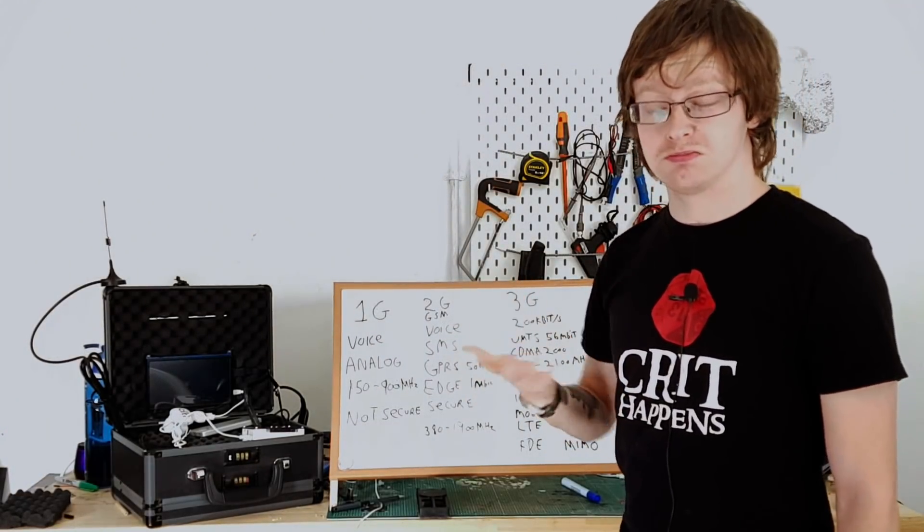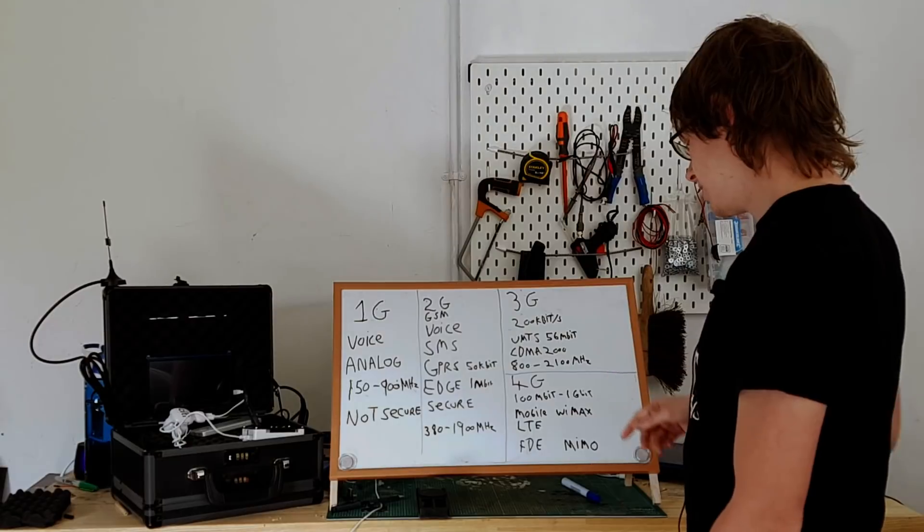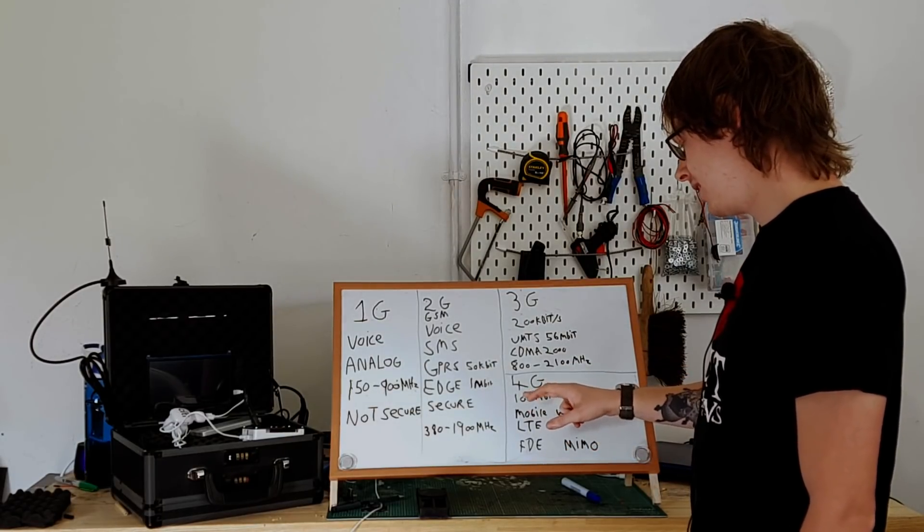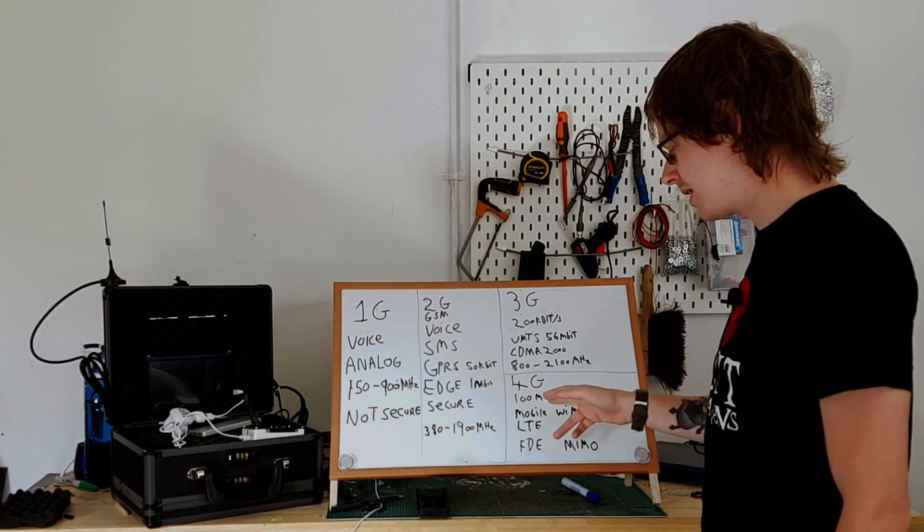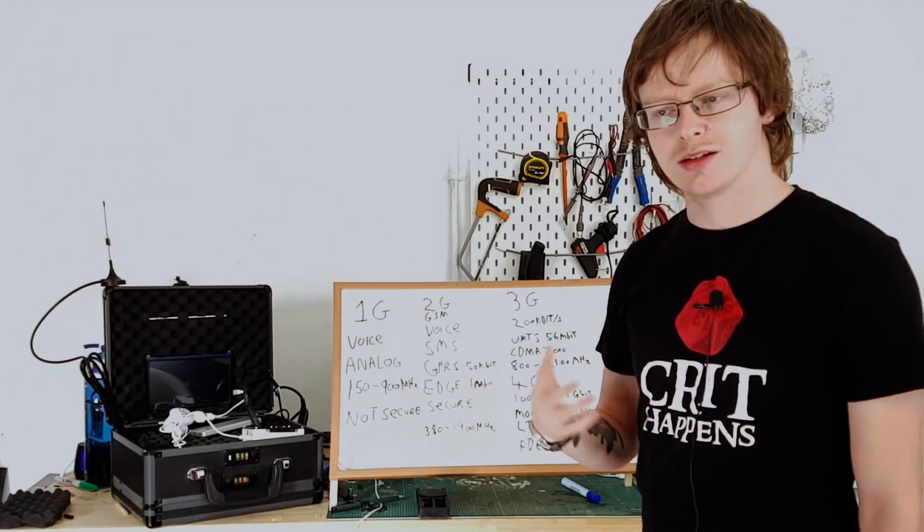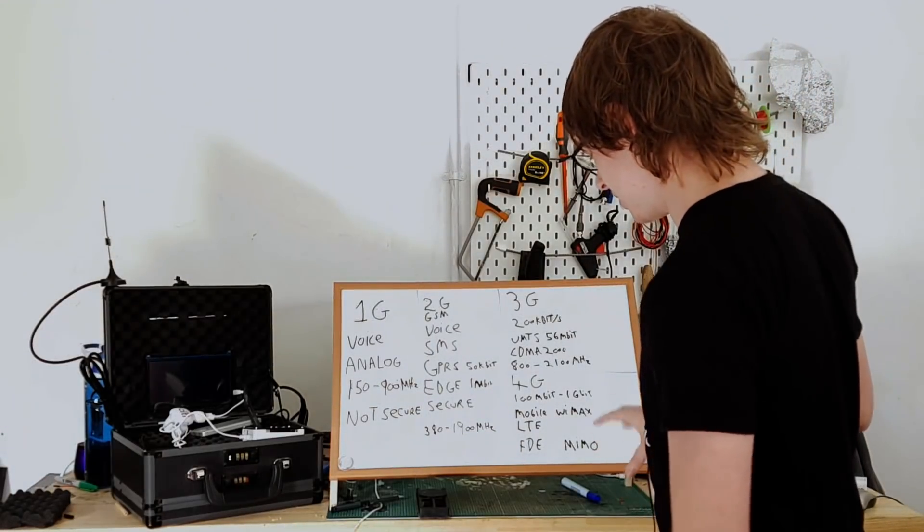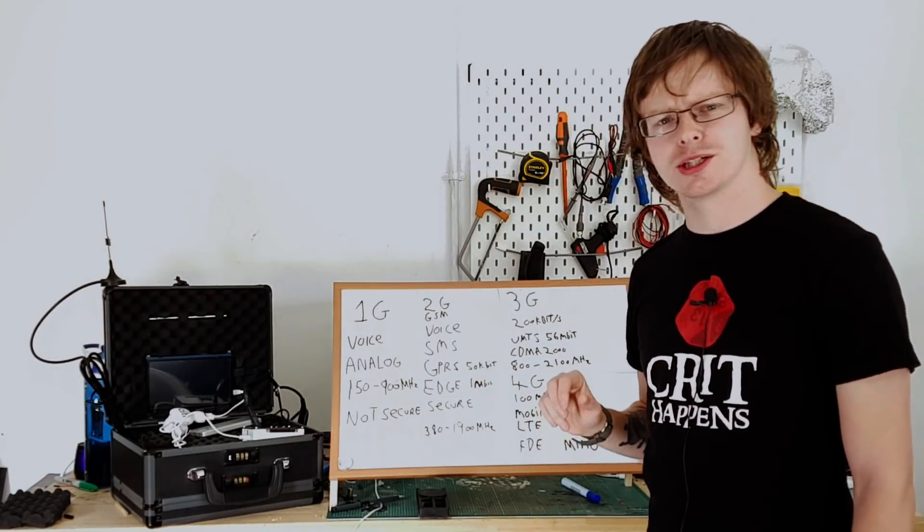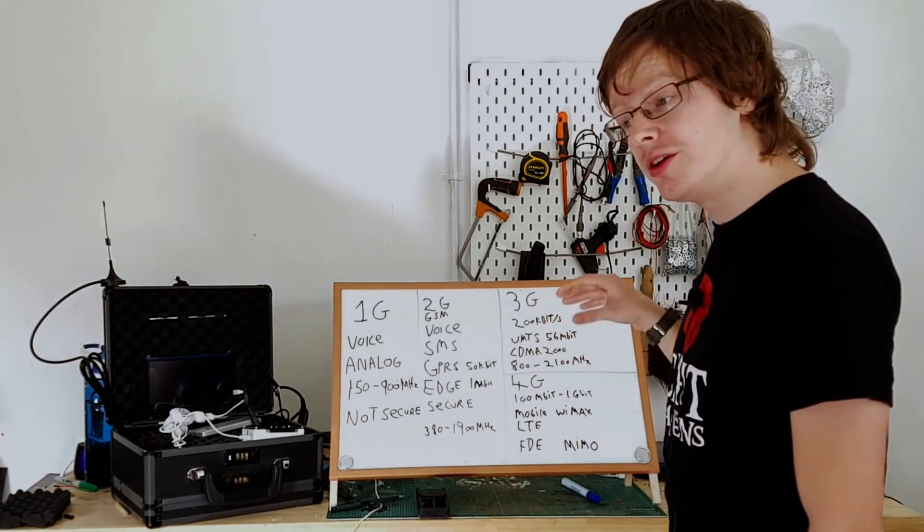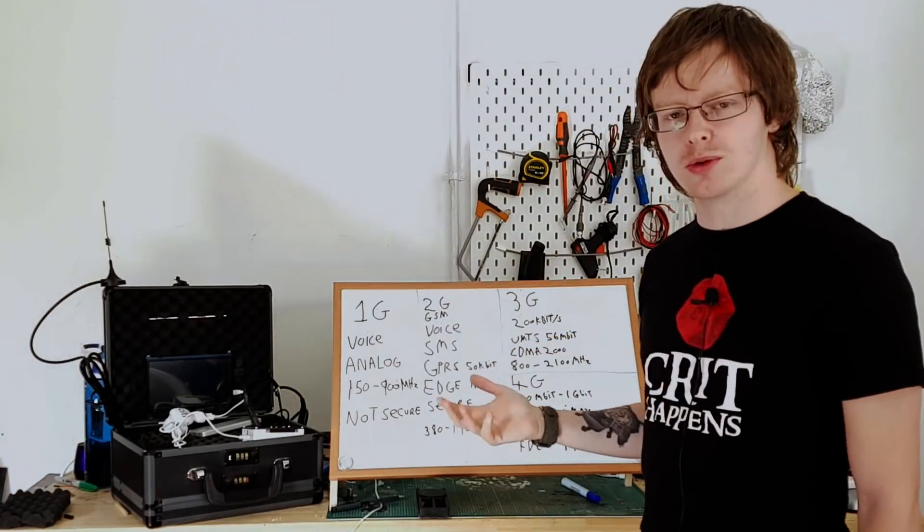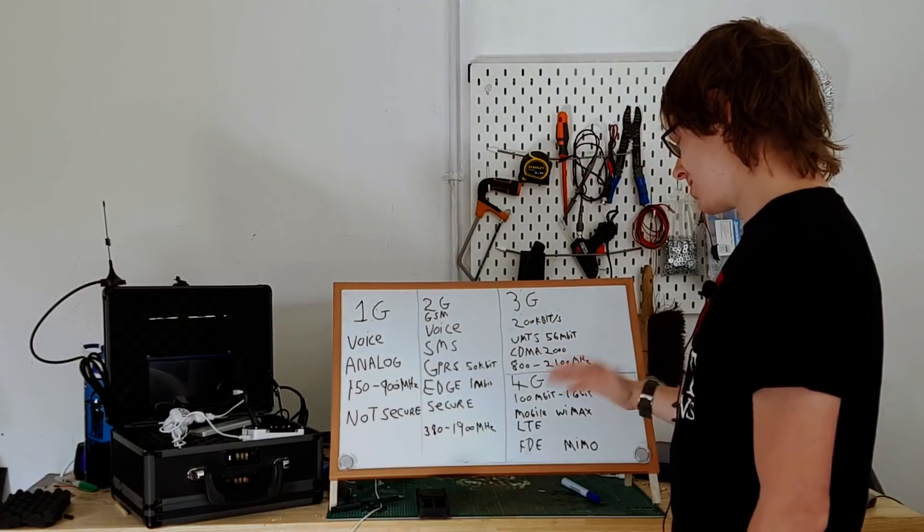4G, to be 4G compliant, it had to be 100 megabits per second or 1 gigabits per second depending on where you are. So the 100 megabits per second is for a moving device, so in a train, in the car, or whatever, you have to be able to get 100 megabits per second. And if you're stationary, 1 gigabit per second. Now you might be thinking I don't get 1 gig per second on my mobile phone, and you would be right. The standard whenever it was created was very optimistic, and none of the devices could actually reach this in real world scenarios.